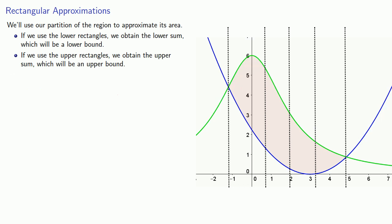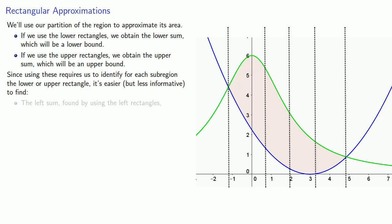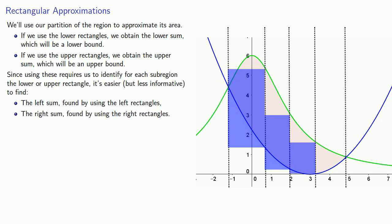We'll take another step that will make our lives easier. Since using either the lower rectangles or the upper rectangles requires us to identify for each subregion the lower or upper rectangle, it's easier, but somewhat less informative, to find the left sum found by using the left rectangles and the right sum found by using the right rectangles. We'll take a look at these next.